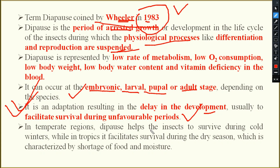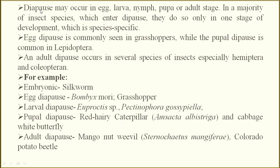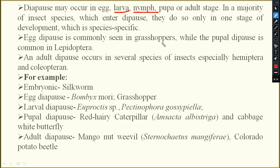In temperate regions, diapause helps the insect survive during cold winter, but in the tropics, diapause helps the insect survive during the summer season. Diapause may occur in any stage — egg, larva, nymph, pupa, or adult. The difference between larva and nymph: larva is the immature stage of Lepidoptera, while nymph is the immature stage of hemimetabolous insects.